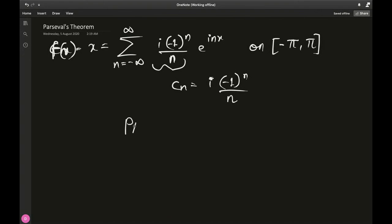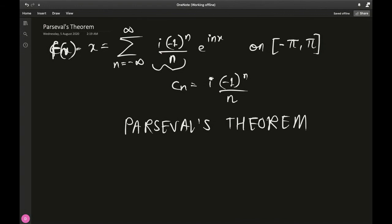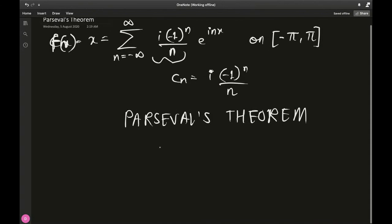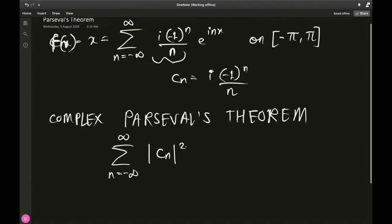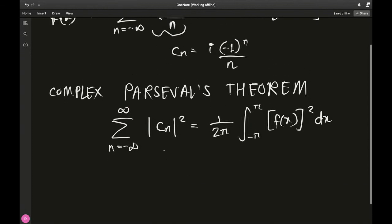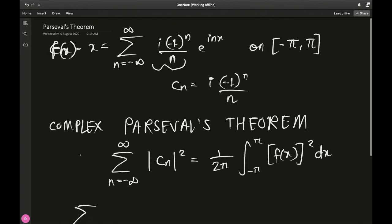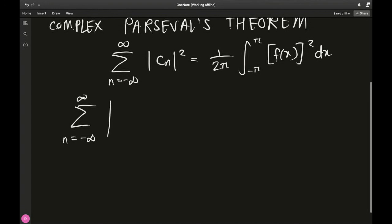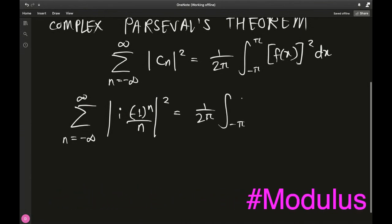There is something called Parseval's theorem. For the complex Fourier series, the complex Parseval's theorem states: the sum from n equals negative infinity to infinity of |c_n|² equals 1 over 2π times the integral from negative pi to pi of |f(x)|² dx. Substituting in, the left-hand side becomes the sum of |i·(−1)^n / n|² and the right-hand side becomes 1 over 2π times the integral from negative pi to pi of x² dx.